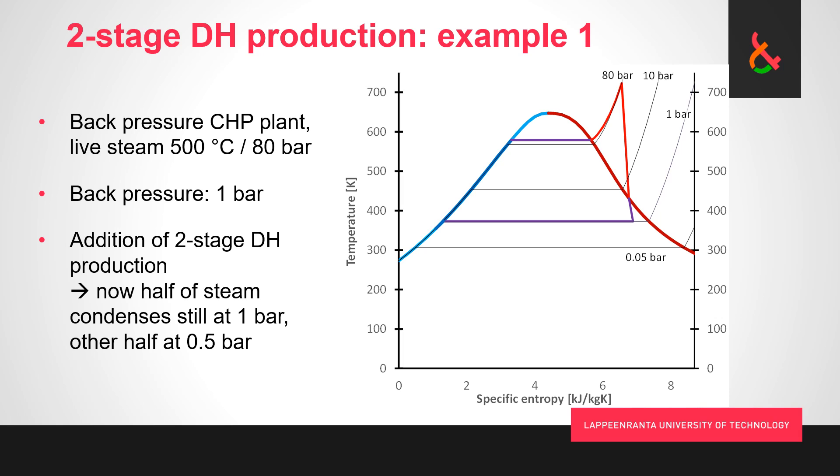We can't get to 0.05 bars, but what we can do if we add two-stage district heating production is that with the addition of a second condenser, the one that operates at lower pressure preheating the return water, we might get to around half a bar. Not a huge deal perhaps, but still substantial and non-negligible, so we want to do this if there is the option.